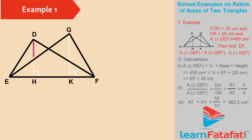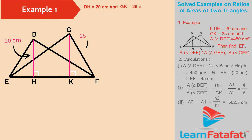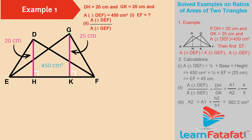In the given figure, segment DH and segment GK are perpendicular to segment EF. If DH is equal to 20 cm and GK is equal to 25 cm, and the Area of Triangle DEF is equal to 450 cm², then find EF and the ratio of the Area of Triangle DEF to the Area of Triangle GEF.